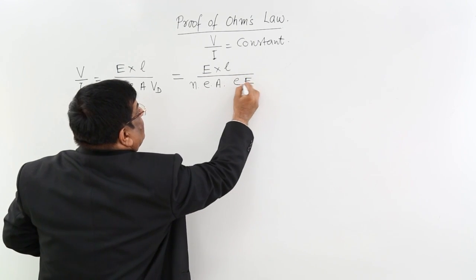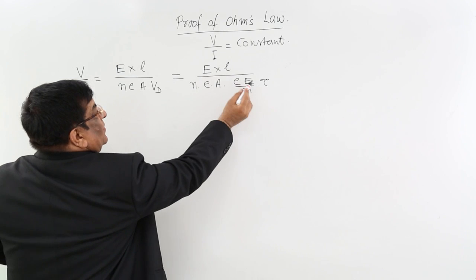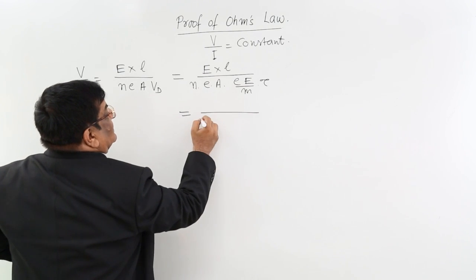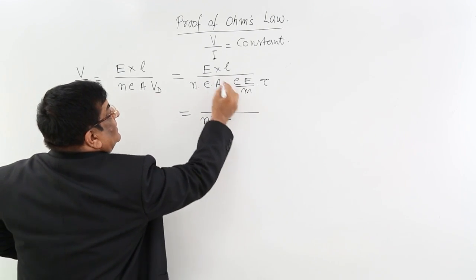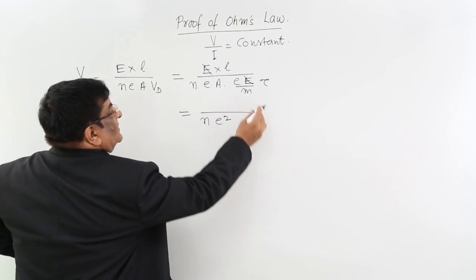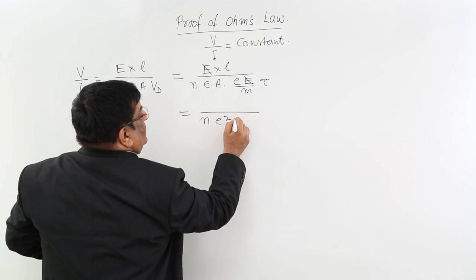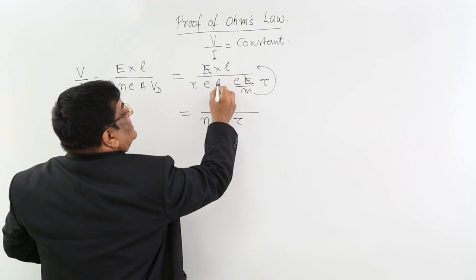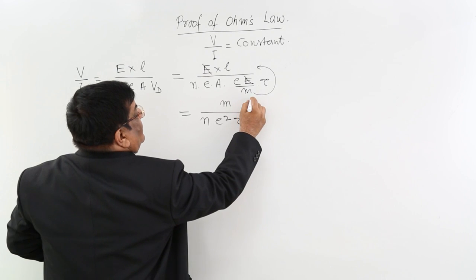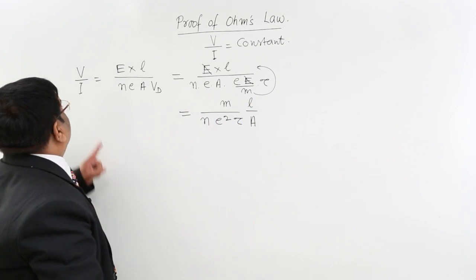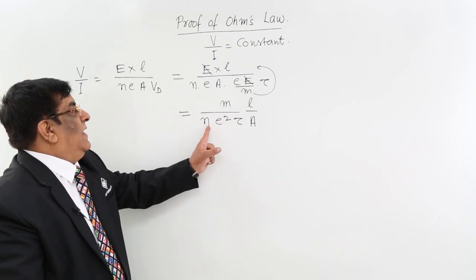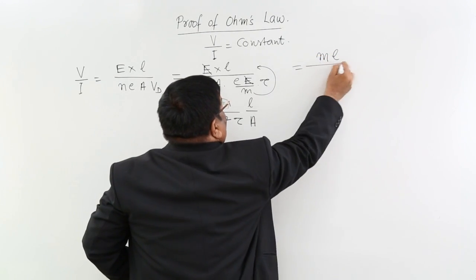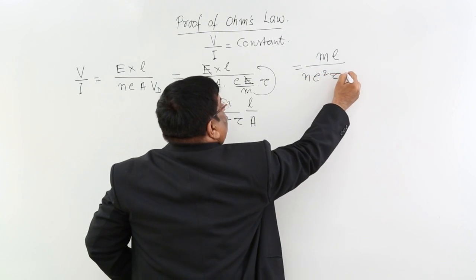Drift velocity is eE upon m times tau, where tau is the relaxation period and E is the electric field. Substituting this in, the electric field terms cancel out, giving us V upon I equals M·L upon N·e²·tau·A.